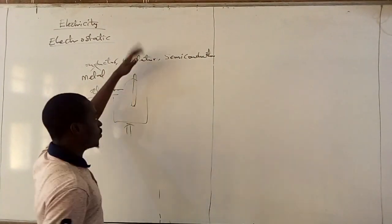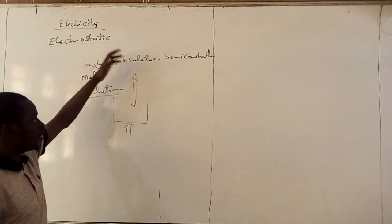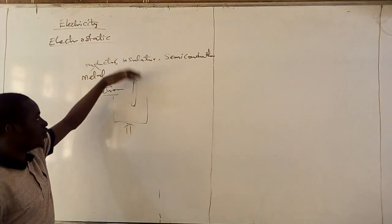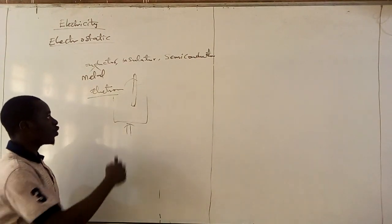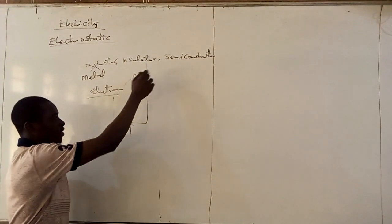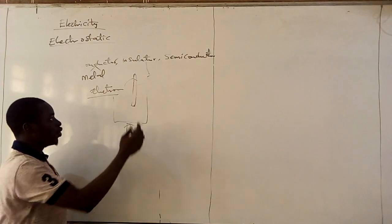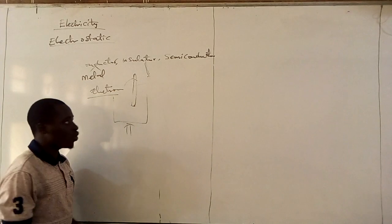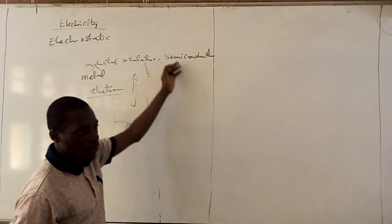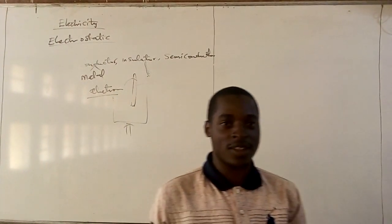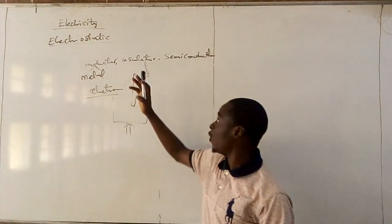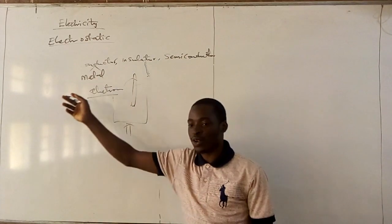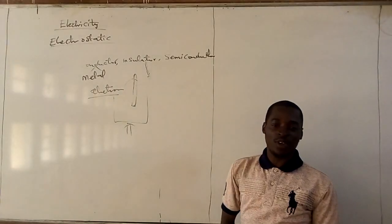We know that an insulator is a material that does not allow the passage of electricity. If there is an insulator, electricity cannot pass through it. Also, a semiconductor is a material that is in between a conductor and an insulator — sometimes it acts as a conductor and sometimes it acts as an insulator.